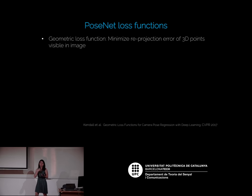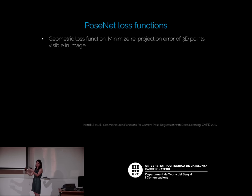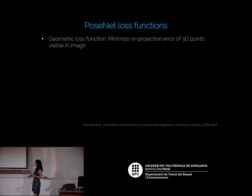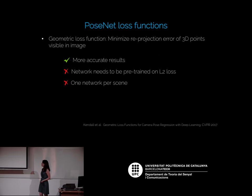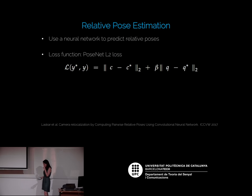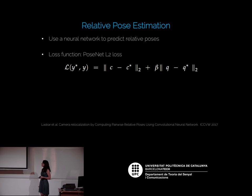To address the geometry problem, a later paper from the same authors proposed a geometric loss function: take the 3D points visible in the image, reproject them back, and compute the error with the matched features. This yields more accurate results, but the network cannot be trained directly on this loss — it's unstable and requires pre-training on L2 first. You still need one network per scene. This raised the question: why not predict relative poses instead of absolute poses?